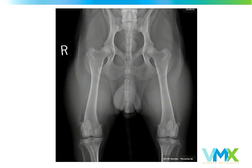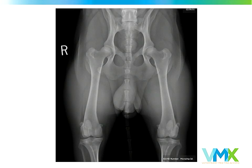This is an example of the standard VD hip view with hips extended. The examples shown here are all Labrador Retrievers. Every dog is registered against other members of the same breed — you cannot compare an English Bulldog or Pug to a Cardigan or Pembroke Welsh Corgi, and you cannot compare a Corgi to a Rottweiler or Labrador. Hip evaluation must be breed-dependent.